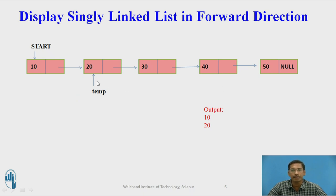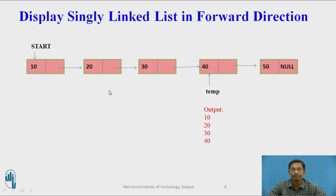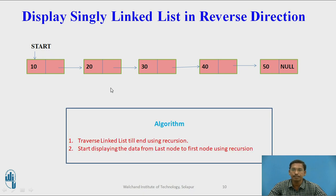We go on printing the value of the data part of each node. Next time temp will point to 20 and we print 20, then temp moves forward and we print 30, then 40, then 50. In this way we can print a singly linked list in forward direction.